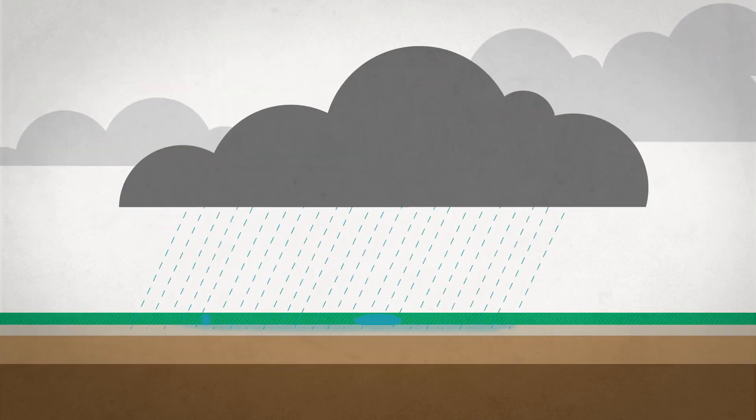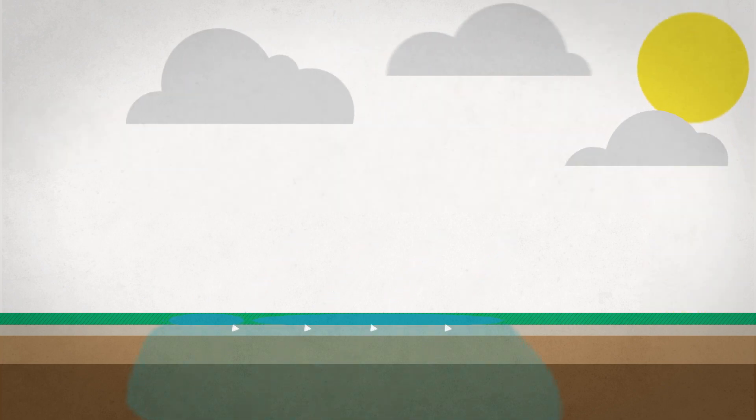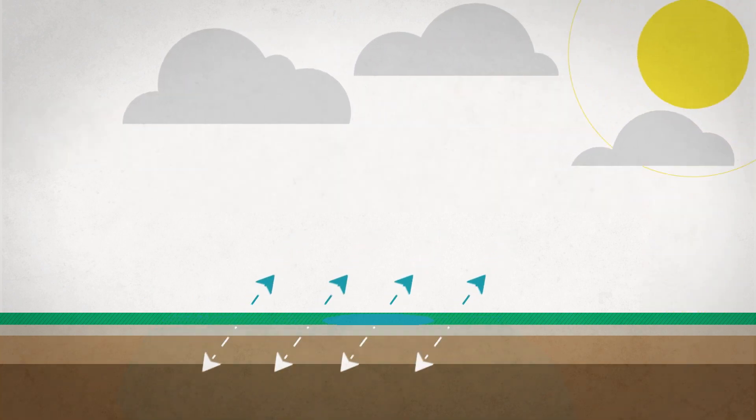Here's how. Under a regular irrigation schedule, soil moisture is constantly elevated and then depleted by gravity, plant transpiration, and evaporation.